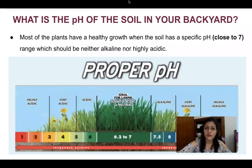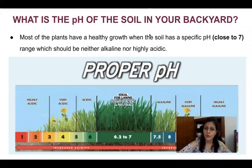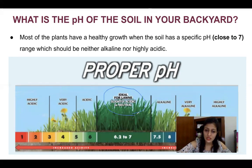Now let's look at the pH of soil. If you have a garden or a park, the soil needs to be in a specific pH range for plants to grow well. Slightly acidic to neutral soil is ideal, with a pH in the range of 6.2 to 7.